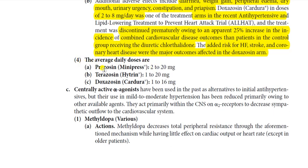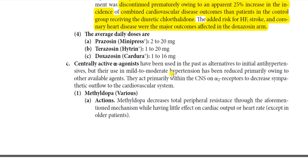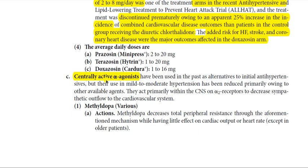The average daily doses are: prazosin 2 to 20 mg, terazosin 1 to 20 mg, and doxazosin 1 to 16 mg. These are the alpha blockers. The next class — centrally acting alpha-1 antagonists — will be discussed in the next lecture. Thank you very much.